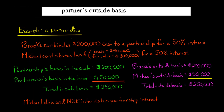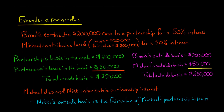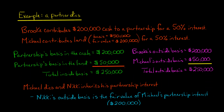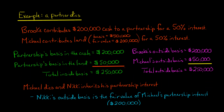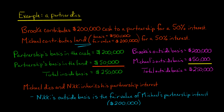Let's do a more in-depth example — the one where a partner dies. Let's say that Brooke and Michael are equal partners; they each have a 50% interest in a partnership. Brooke contributed $200,000 cash in exchange for her partnership interest. Michael contributed land that had a fair value of $200,000 and a basis of $50,000.